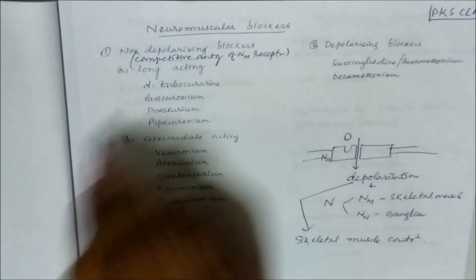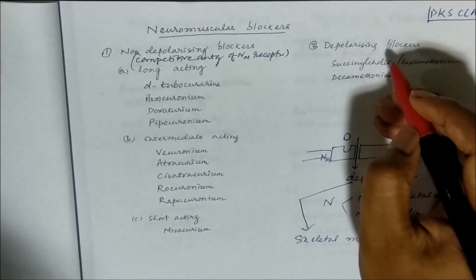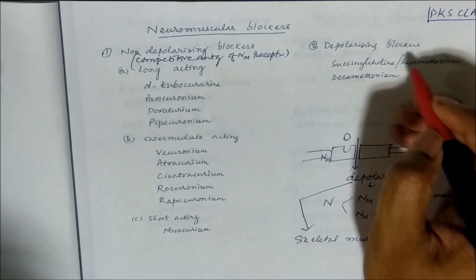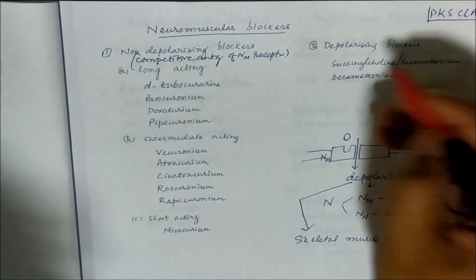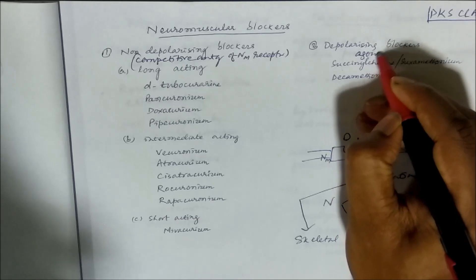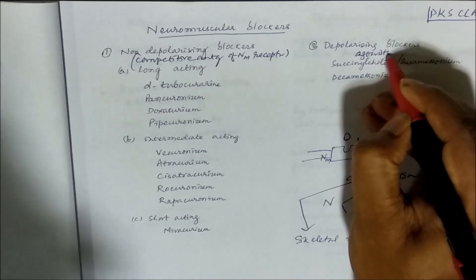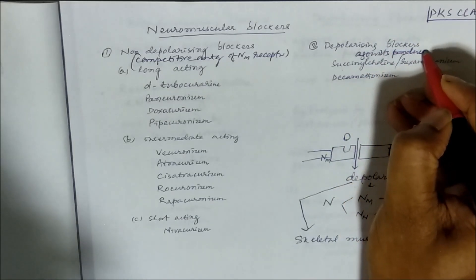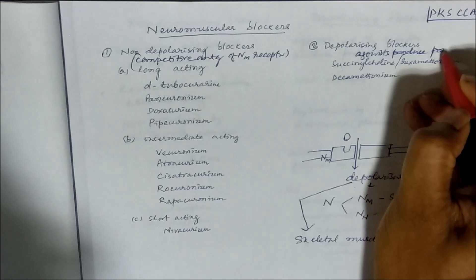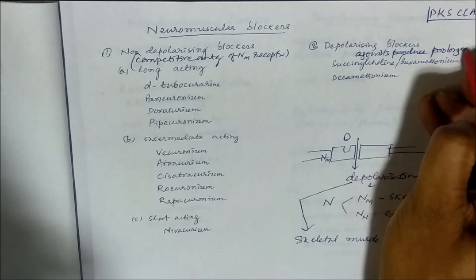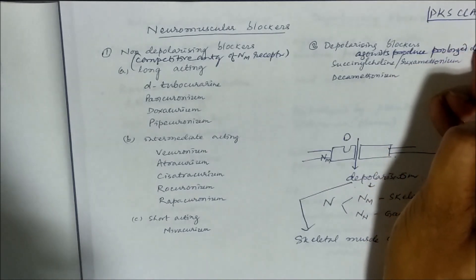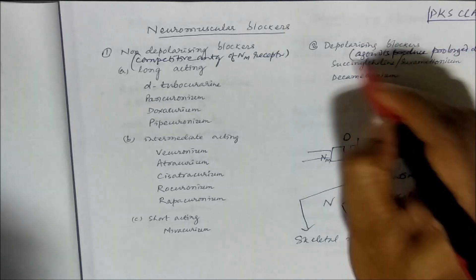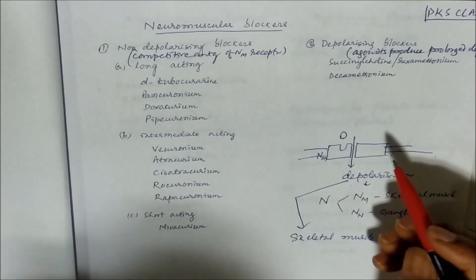Whereas the depolarizing blockers are essentially agonists — agonists that produce prolonged depolarization. Because of this prolonged depolarization, there will be block of this receptor.